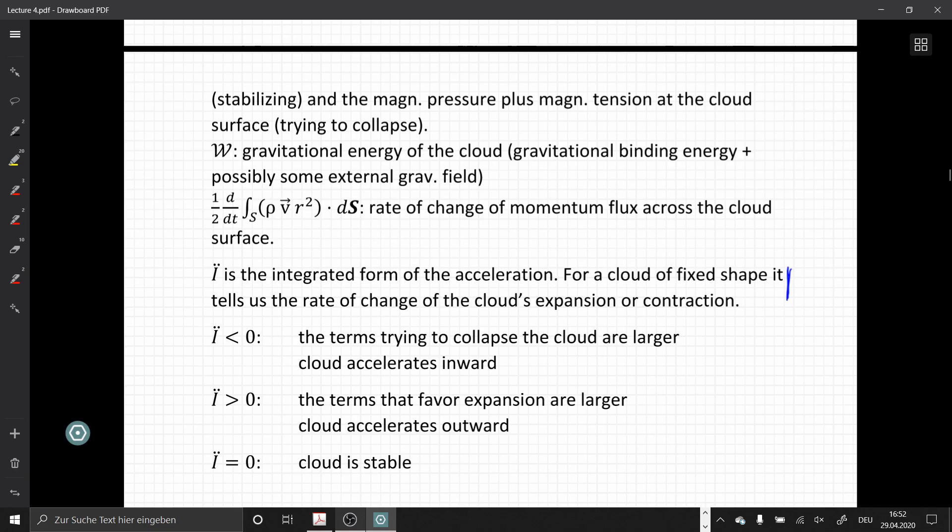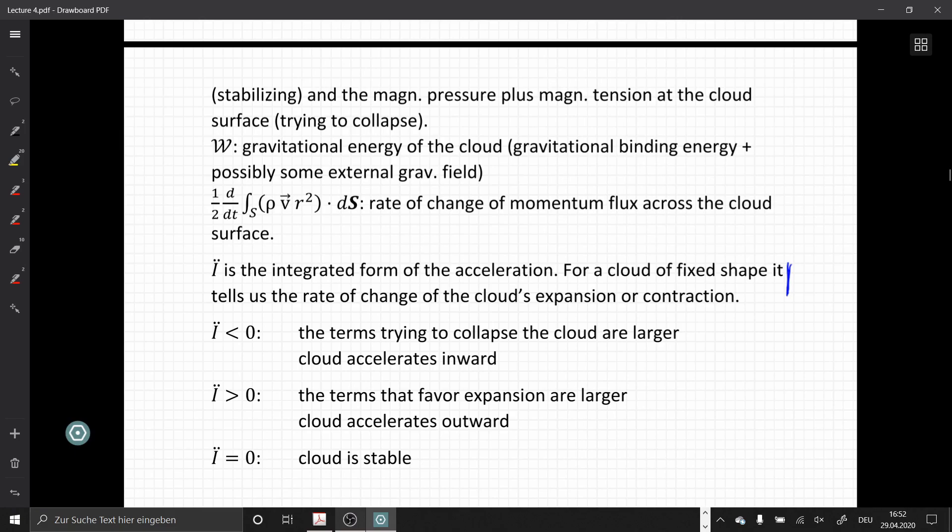Consequently, if I dot dot is zero, zero acceleration means our cloud is stable. If I dot dot is negative, then that means that all the terms in our virial theorem that are trying to collapse the cloud are larger and the cloud accelerates inward. If I dot dot is positive, the terms that favor expansion are larger and the cloud accelerates outward.